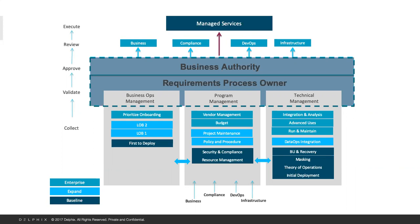Just keep in mind that first to deploy — you can actually have the entire program management completely done. You're not limited to just the colors you see matching. You can have first-to-deploy program management and technical management completely the same, everything completed, but still have lines of business one and two that haven't even onboarded. Policy and procedure, project management, security, compliance — could all be that same dark blue. Technical management fully deployed, integration analysis, advanced use cases, automation CICD — all in the first deployment — and you still have other lines of business that don't even know what Delphix is.